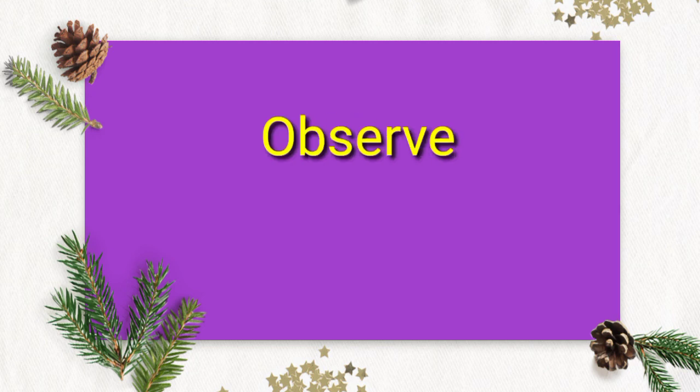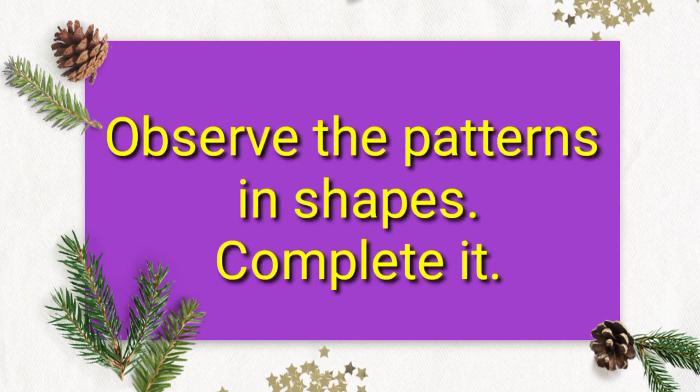Now let's observe the patterns in shapes and complete them. Square, square, square — squares are repeating. Triangle, circle, triangle, circle — before we saw one shape repeating, but now two shapes are repeating. Next: up arrow, down arrow, up arrow, down arrow — in this also two shapes are repeating.